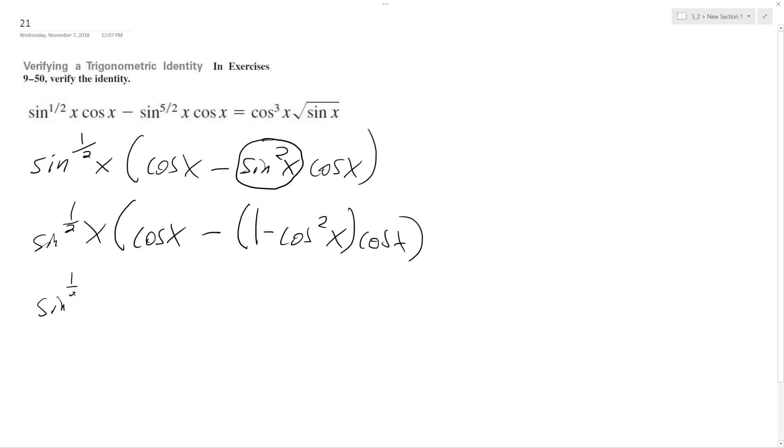All right, so still working here. Oh, oops. So I'm multiplying this through, so this is minus cosine x. And then this minus a negative becomes a plus, and it's cosine cubed x.